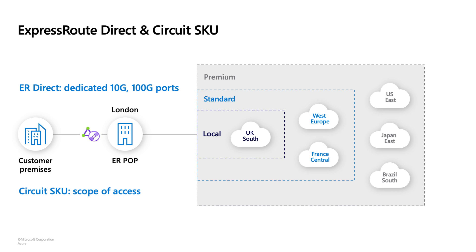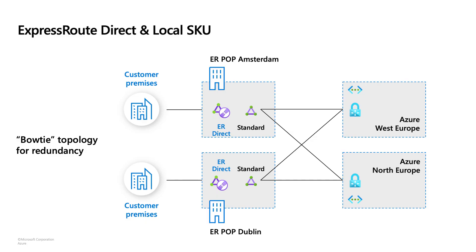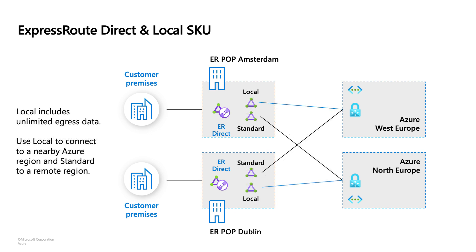We've seen a very common design that also follows our best practice guidance: a customer connects to us at two peering locations in Amsterdam and Dublin, and puts VMs in two regions — West Europe and North Europe — with each circuit connected to both regions. This is what we call the bowtie topology, which gives you reachability and resiliency. You can make a slight modification: instead of one standard circuit, you can create a local circuit at each peering location — for example, a local circuit from Amsterdam to West Europe and one to North Europe. The benefit is that local circuits don't charge for data transfer, so if your application sends a lot of data from Azure to on-premises, this design can save you money.